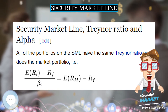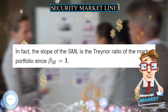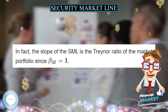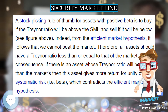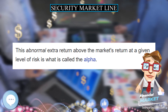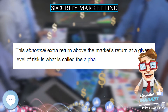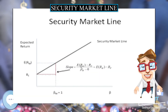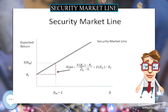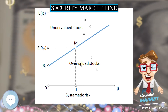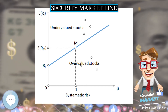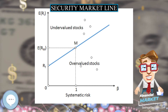Regarding the Treynor Ratio and Alpha: all of the portfolios on the SML have the same Treynor ratio as the market portfolio. In fact, the slope of the SML is the Treynor ratio of the market portfolio, since beta of the market equals 1. A stock-picking rule of thumb for assets with positive beta is to buy if the Treynor ratio will be above the SML, and sell if it will be below.